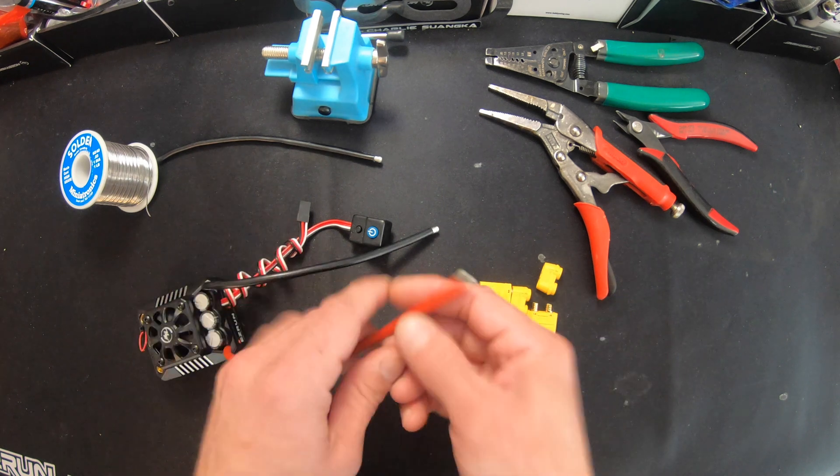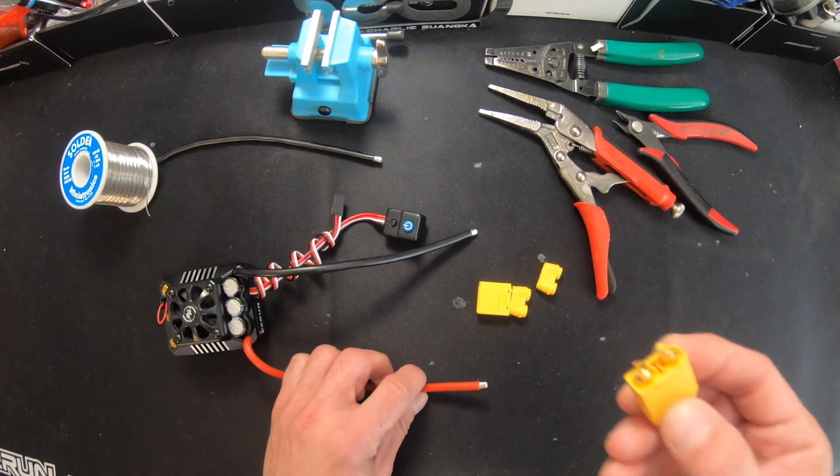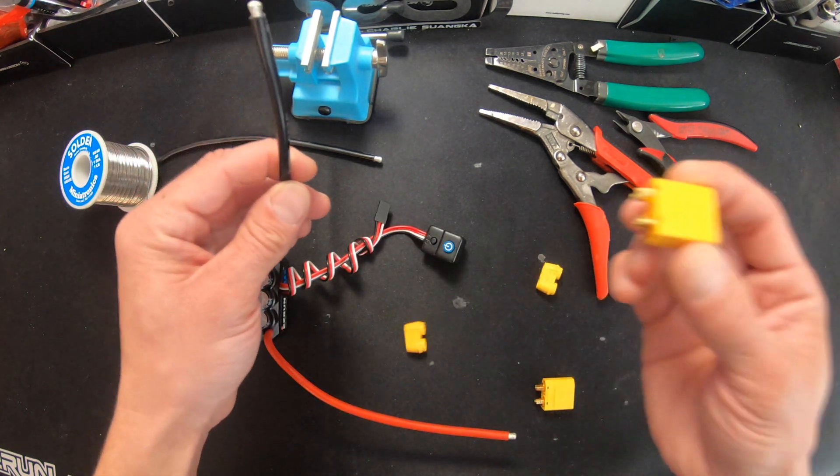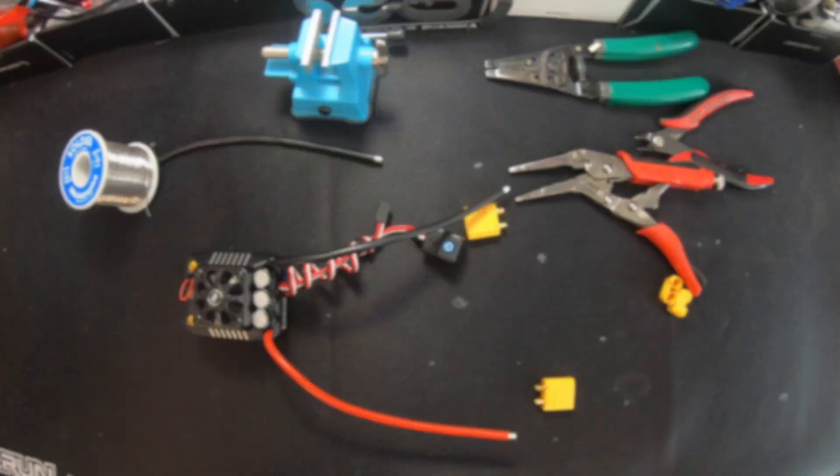For the most part, it's pretty simple. The positive wire of the speed control goes to the positive side of plug number one. The negative side of the speed control goes to the negative side of plug number two, and then the remaining leads get connected together.